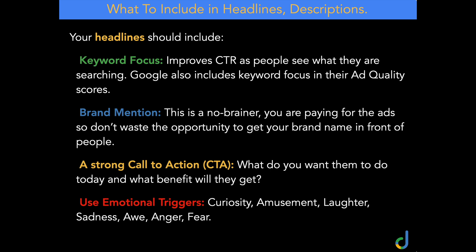Another type of call to action leads us to the next point: using emotional triggers. Your emotional triggers could be things about generating curiosity, amusement, or laughter. But what I also find works really well with a call to action is using the emotional trigger of fear — writing something like a limited sale or a limited offer, generating that fear that they don't want to miss out on a current offer or special on your product or service. So don't forget those core headline elements for ensuring higher click-through ratios.